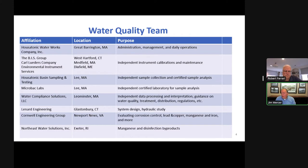This is our water quality team. We have BIS Corp, Karl Luter's company and Environmental Instrument Services who do independent instrument calibrations. Housatonic Basin does our independent water sampling. Microbac which is one of the largest labs in the country does the testing. Our team of engineers include Lennard Engineering who has done system design and hydraulic study. We have Cornwell Engineering who evaluated corrosion control and lead and copper. We had Northeast Water Solutions with Bob and of course we had Rich Gullick who has done a lot of work with the system including identifying manganese as the issue that we're currently dealing with.